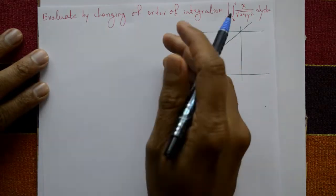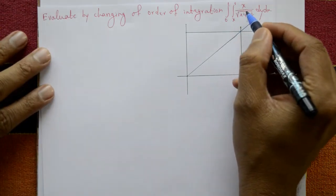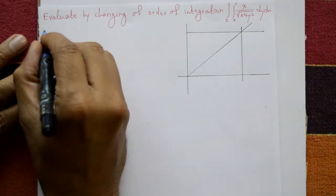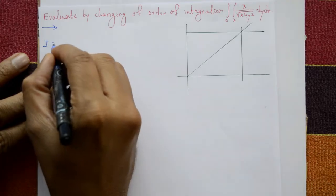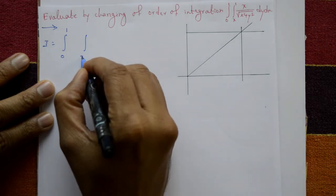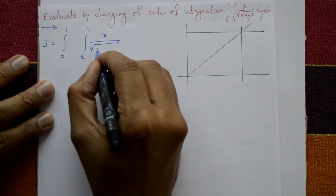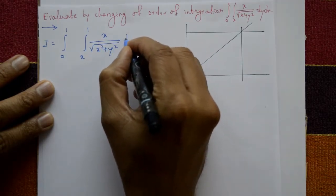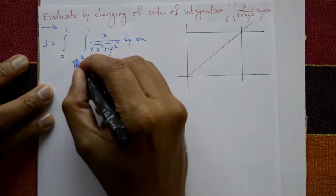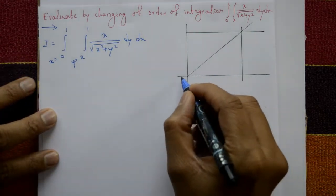Evaluate by changing the order of integration: integration of 0 to 1, integration of x to 1, x upon square root of x squared plus y squared, dy dx. Now the solution: I means integration of 0 to 1 and integration of x to 1 of x upon square root of x squared plus y squared with respect to y, then with respect to x. First with respect to y: y goes from x to 1. Second with respect to x: x goes from 0 to 1.